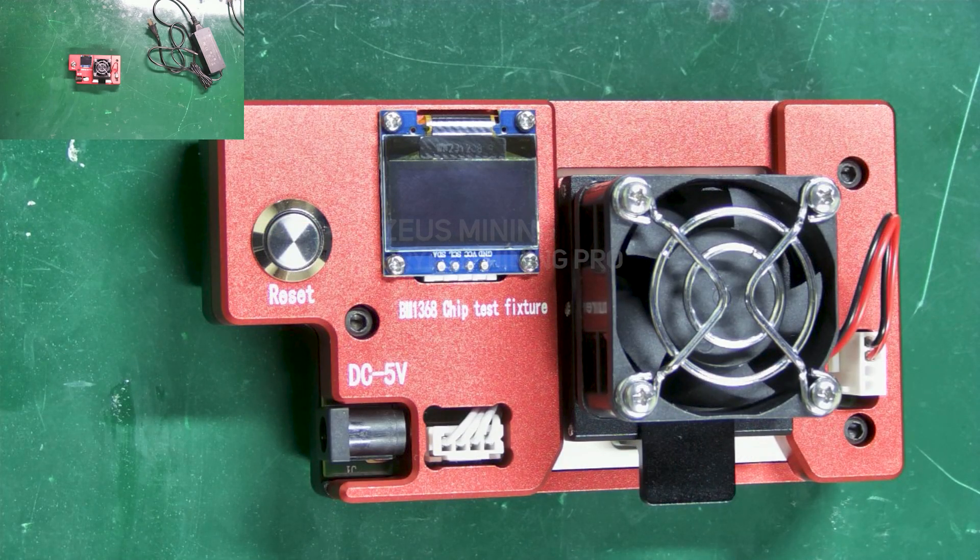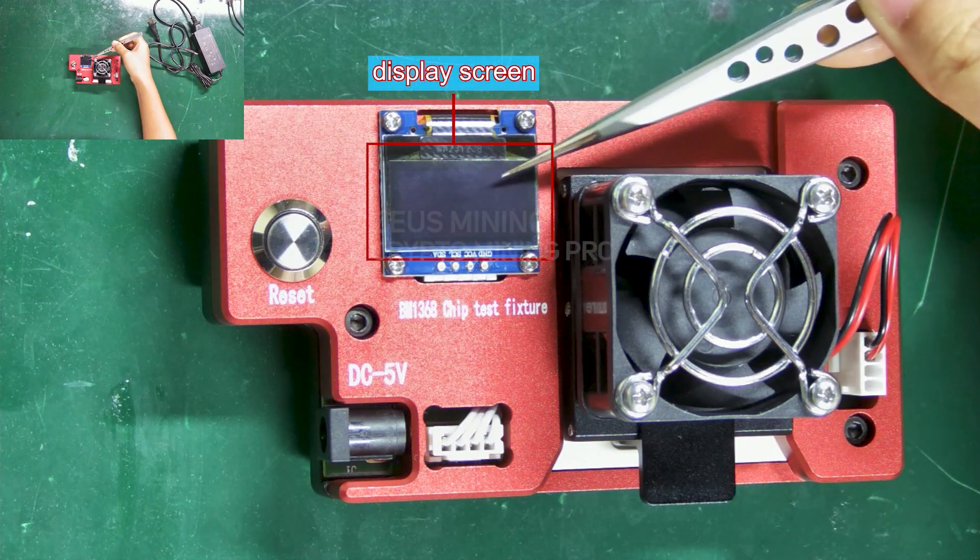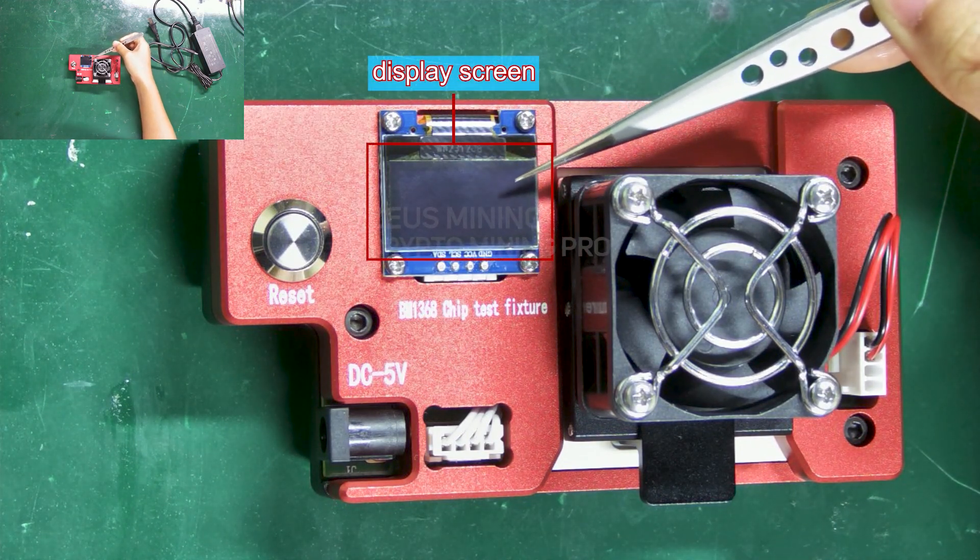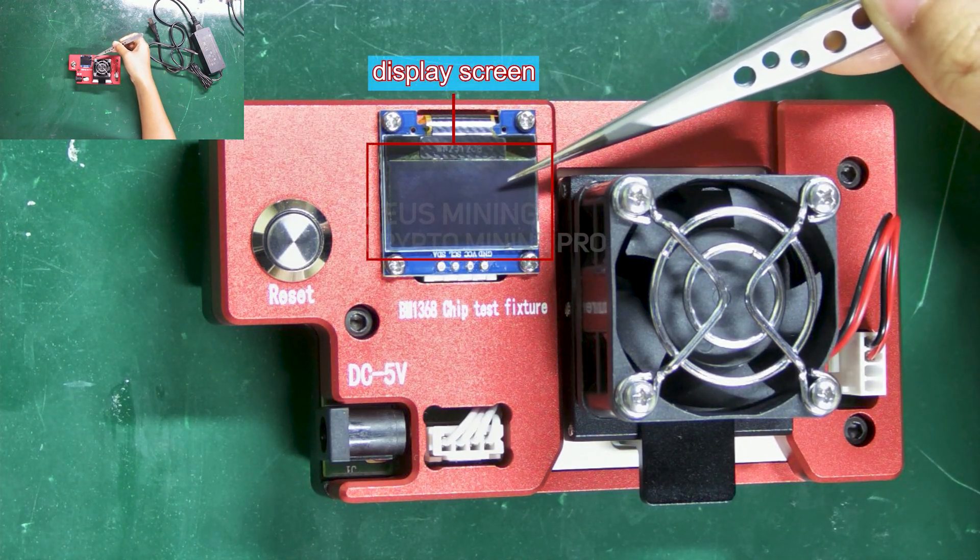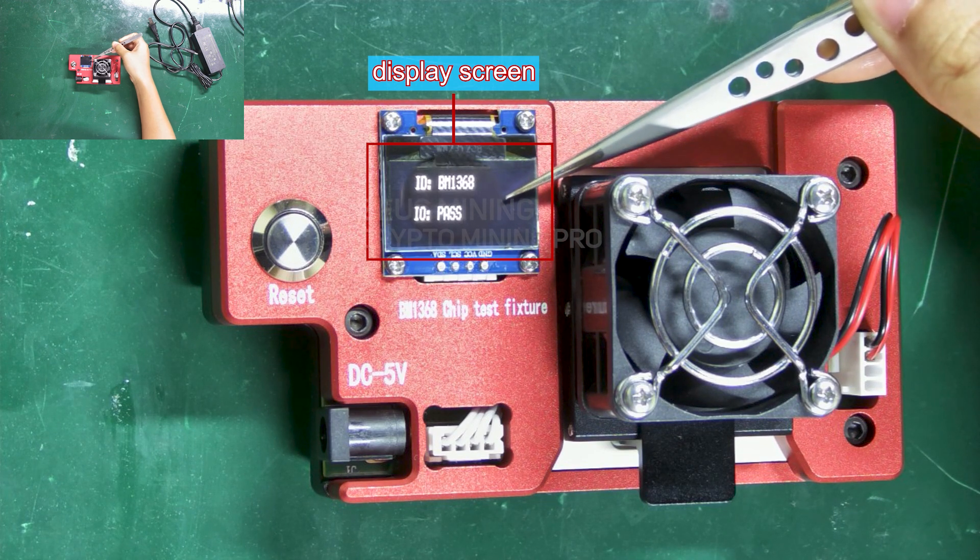Now I will start to introduce the main unit in detail. This is the display screen which mainly displays the test results, including the model of the ASIC chip and its quality.